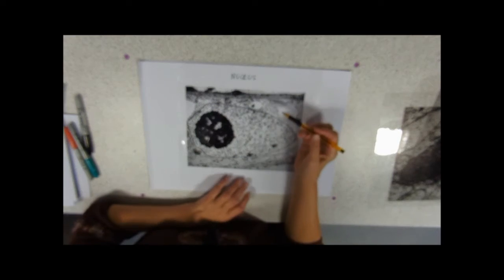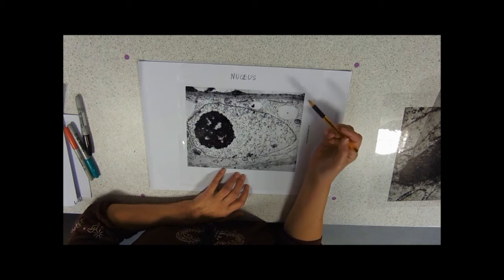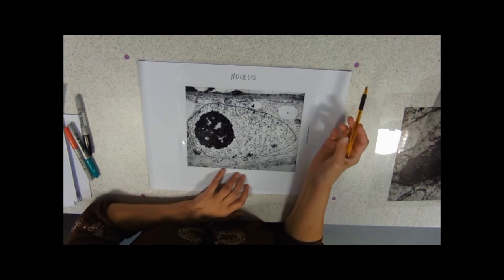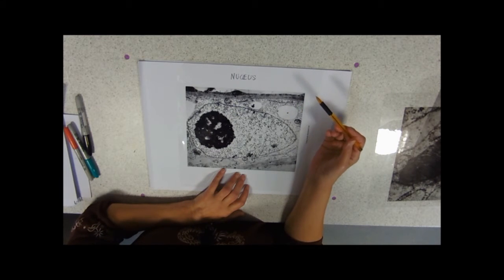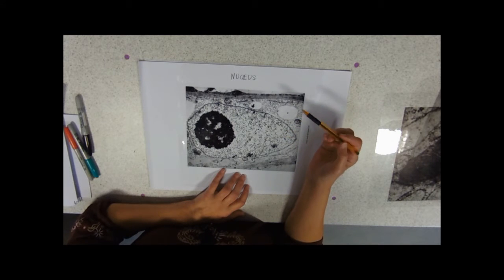And every so often there'll be a hole going all the way through it. So these are called nuclear pores. The thing that we all know about the nucleus is that it contains the DNA and chromosomes.